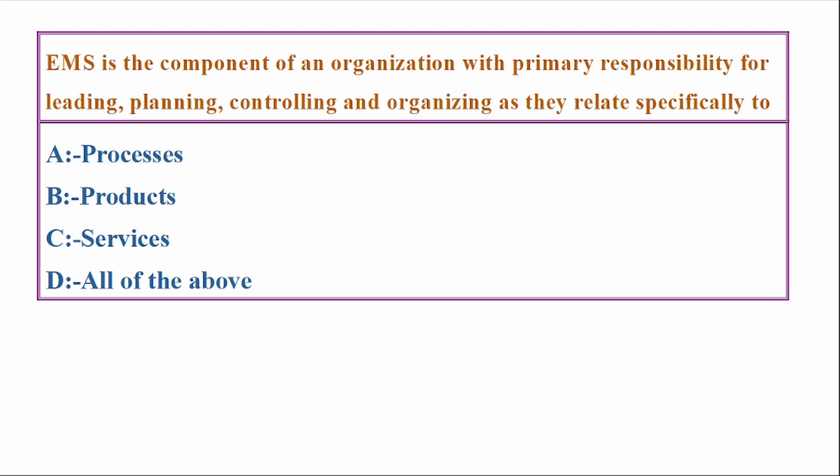EIA is the component of an organization with primary responsibility for leading, planning, controlling, and organizing as they relate specifically to: Options - process, product, services, all of the above. Correct answer: Option D, all of the above.